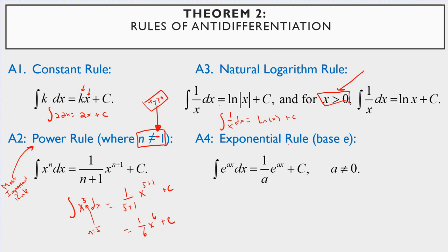And finally our exponential rule — this is base e. If you have the integral of e to the ax dx, the result is 1 over a times e to the ax plus c. For example, the integral of e to the 5x dx: here a is 5, so this integrates to 1 fifth e to the 5x plus c. You can verify by taking the derivative, which gives back e to the 5x.